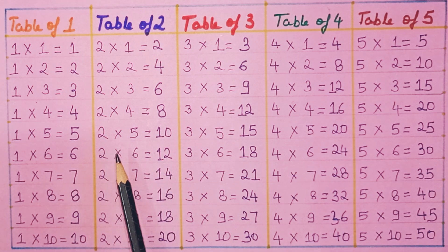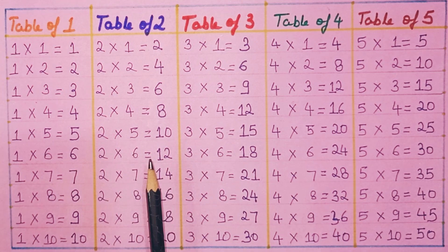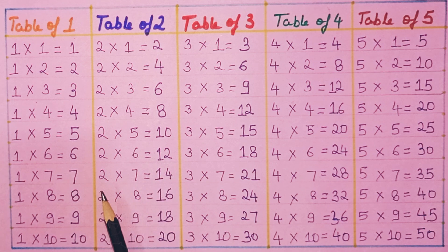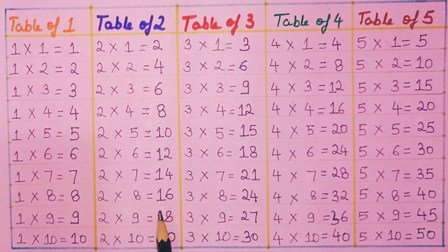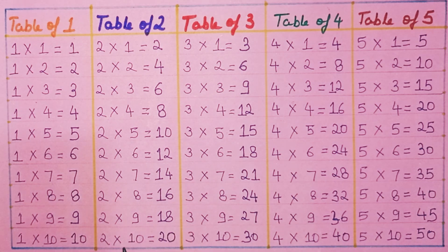Two sixes are twelve. Two sevens are fourteen. Two eights are sixteen. Two nines are eighteen. Two tens are twenty.